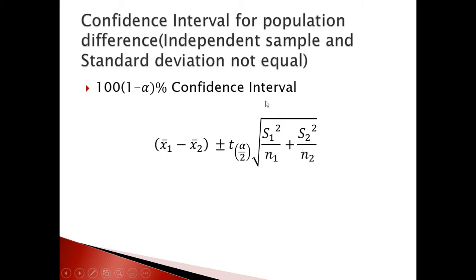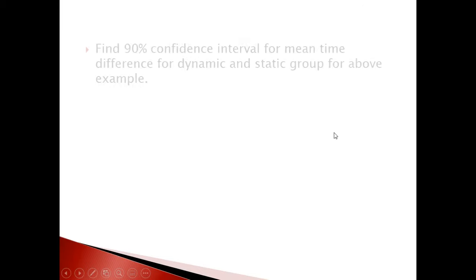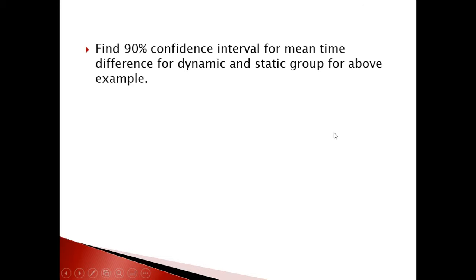Now for the confidence interval: plug the values into the confidence interval formula using s₁² over n₁ plus s₂² over n₂. Find the 90% confidence interval for the mean time difference for the dynamic and static group from the above example.